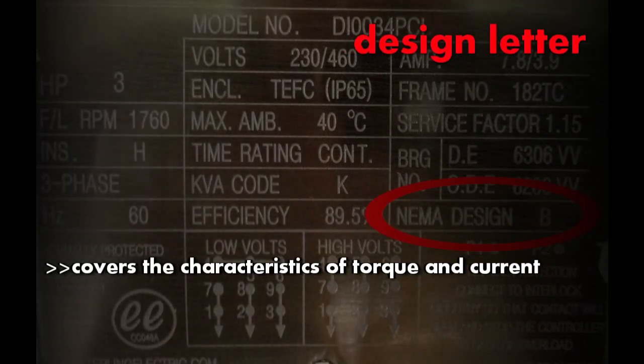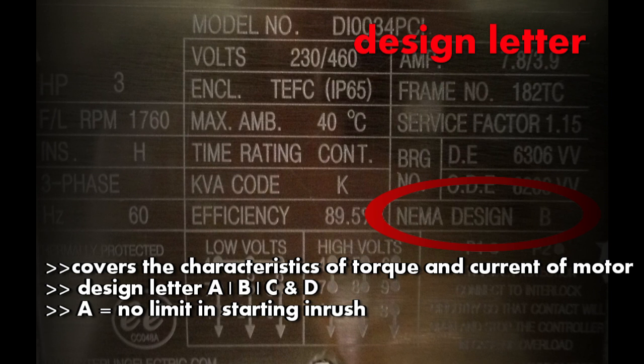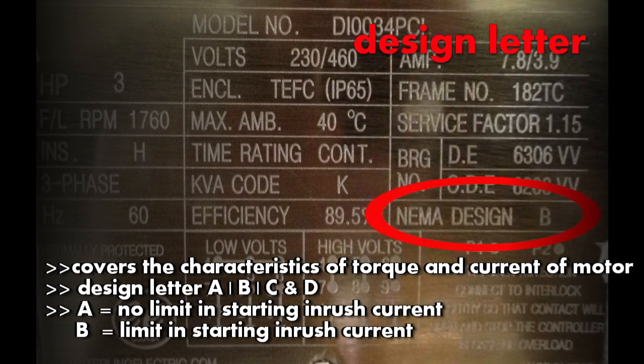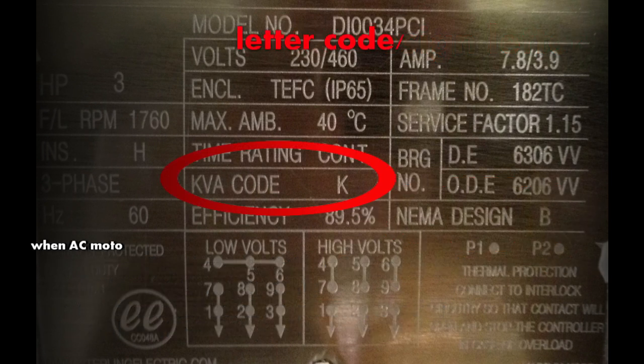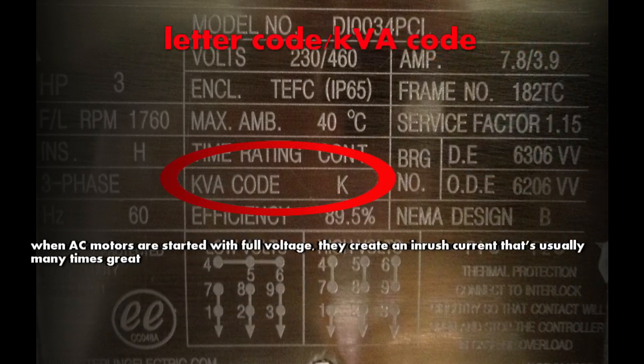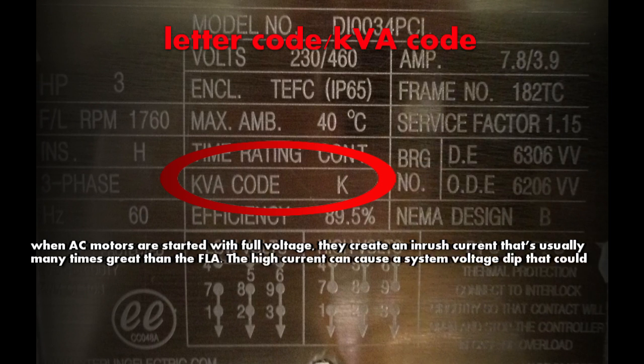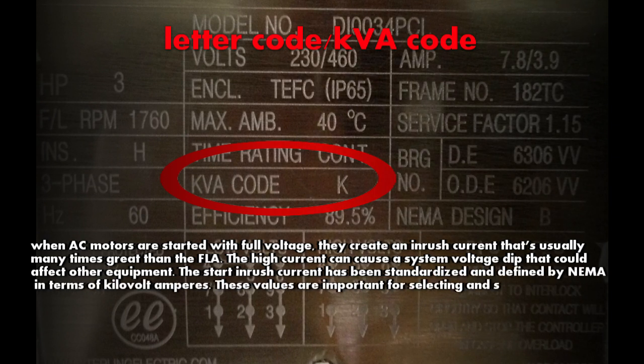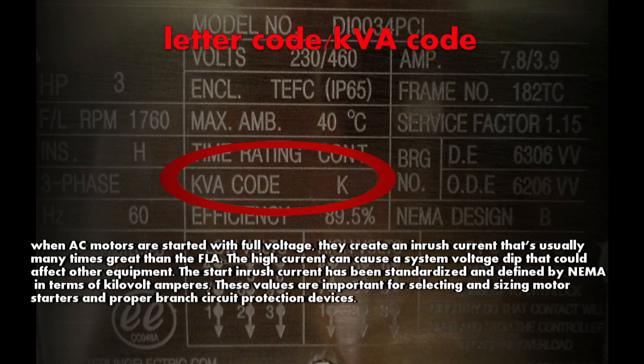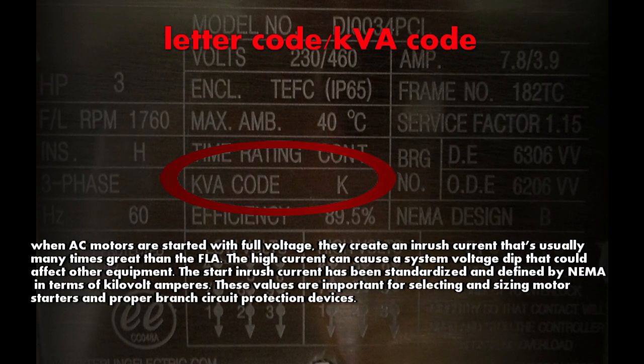Next is the design letter. It covers the torque and current characteristics of the motor. The categories A, B, C and D define different characteristics. Design A, there is no limit in starting inrush current. While in design B, the manufacturer puts a limit to inrush current on its product. When AC motors are started with full voltage, they create an inrush current that's usually many times greater than the full load ampere. The high current can cause a system voltage dip that could affect other equipment also. The start inrush current has been standardized and defined by NEMA in terms of kVA. These values are very important for selecting and sizing motor starters, proper branch circuit protection devices.